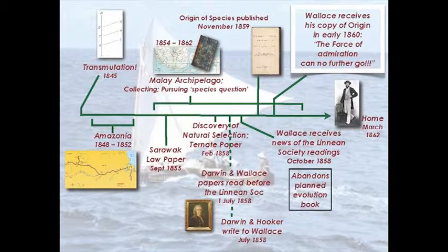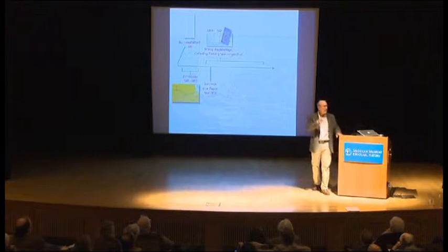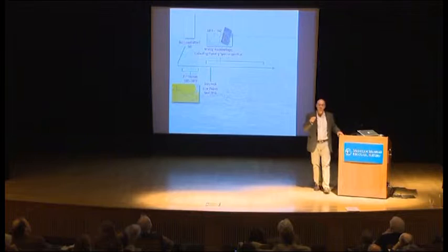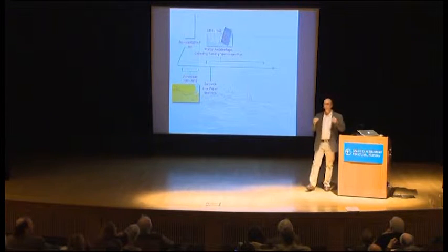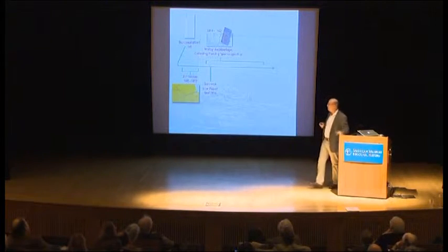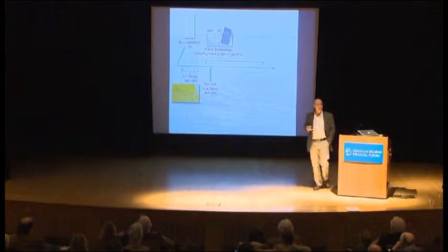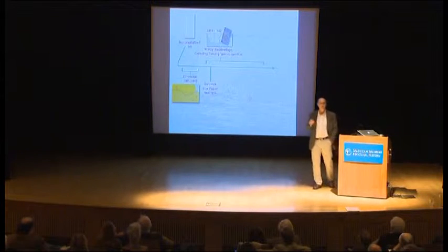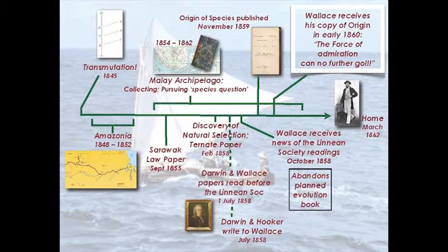Wallace was firing off paper after paper. We've heard how the naturalists of London were telling his agent Stevens they'd like to hear a little less theory and see more specimens from Mr. Wallace. He's not getting a lot of support, but he is driven by a quest — interested in biogeography, species relationships, and behavior. Very importantly in the history of this field, the 1855 Sarawak law paper may be the clearest exposition of evolution that never actually mentions evolution or transmutation.